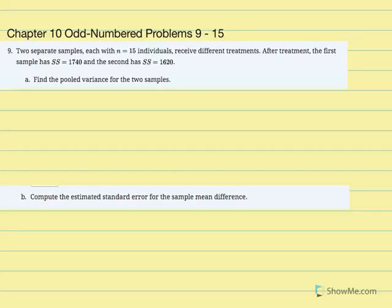Chapter 10 odd number problems 9 through 15. Number 9: two separate samples, each with n equal to 15 individuals, receive different treatments. After treatment, the first sample has sum of squared deviations equal to 1740 and the second has sum of squared deviations equal to 1620. Find the pooled variance for the two samples.